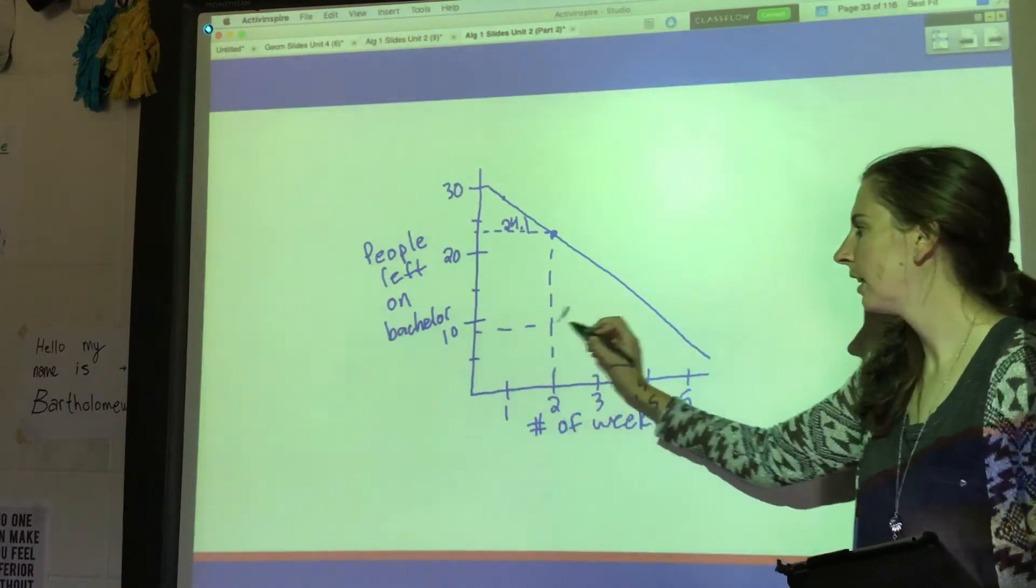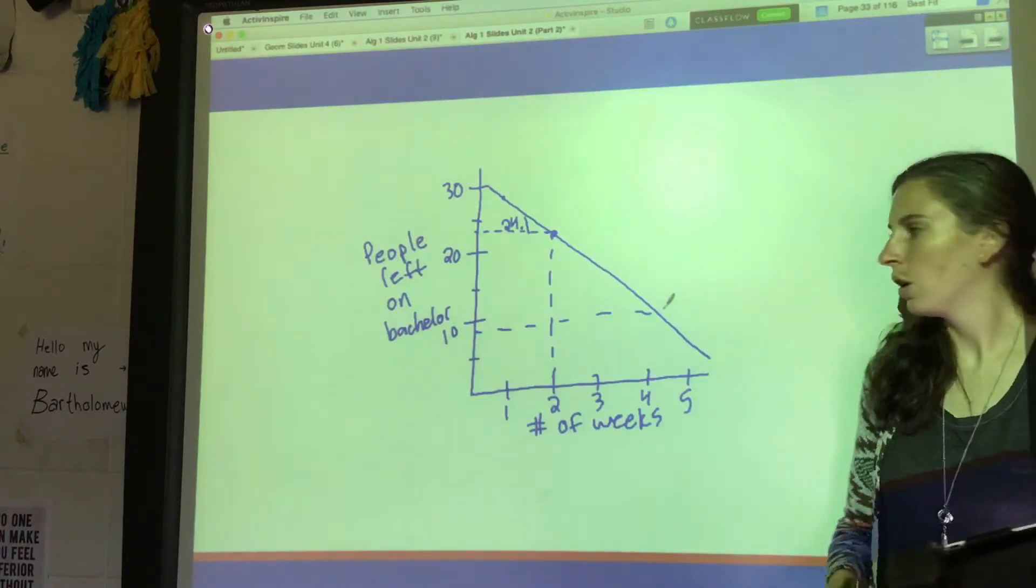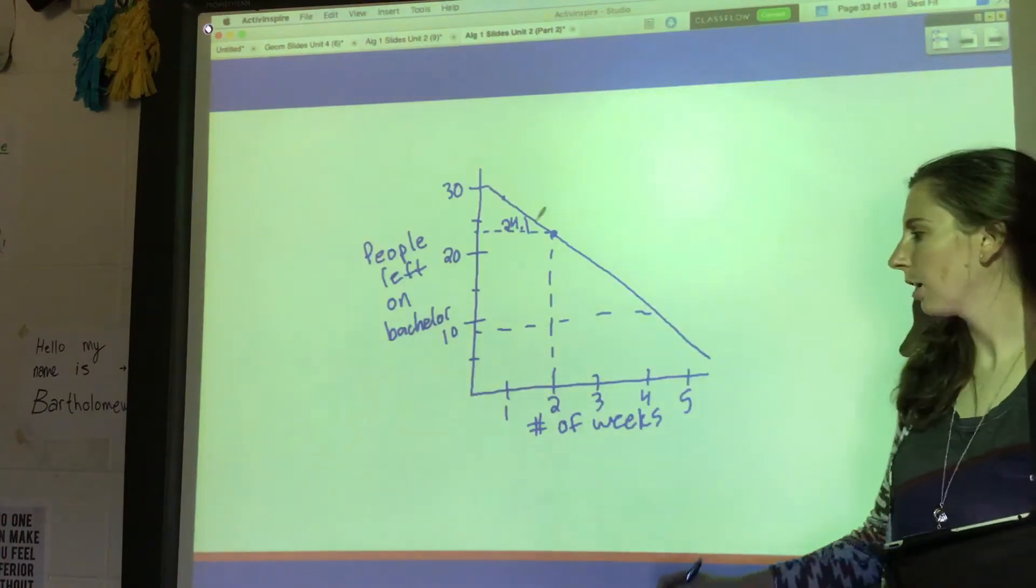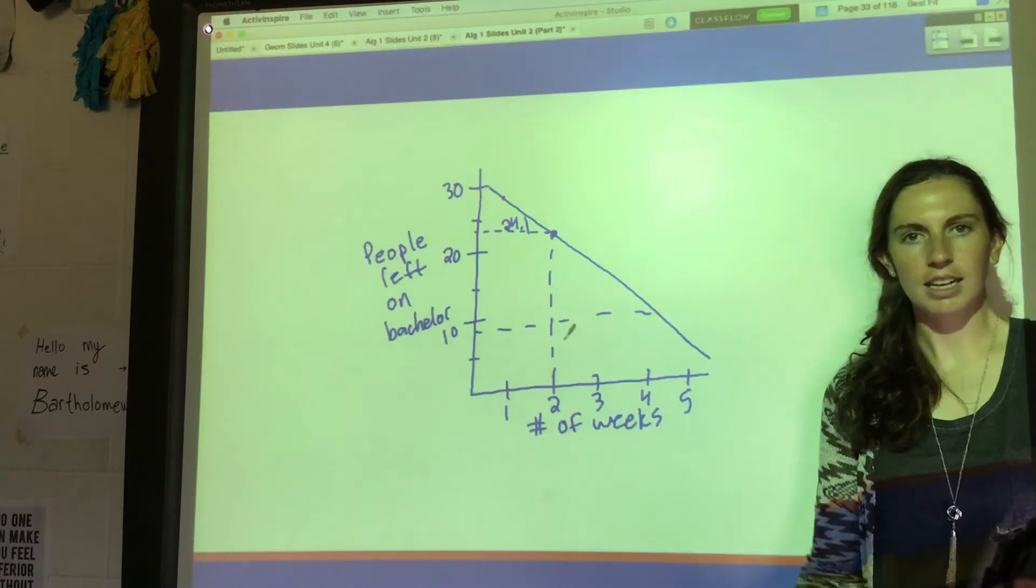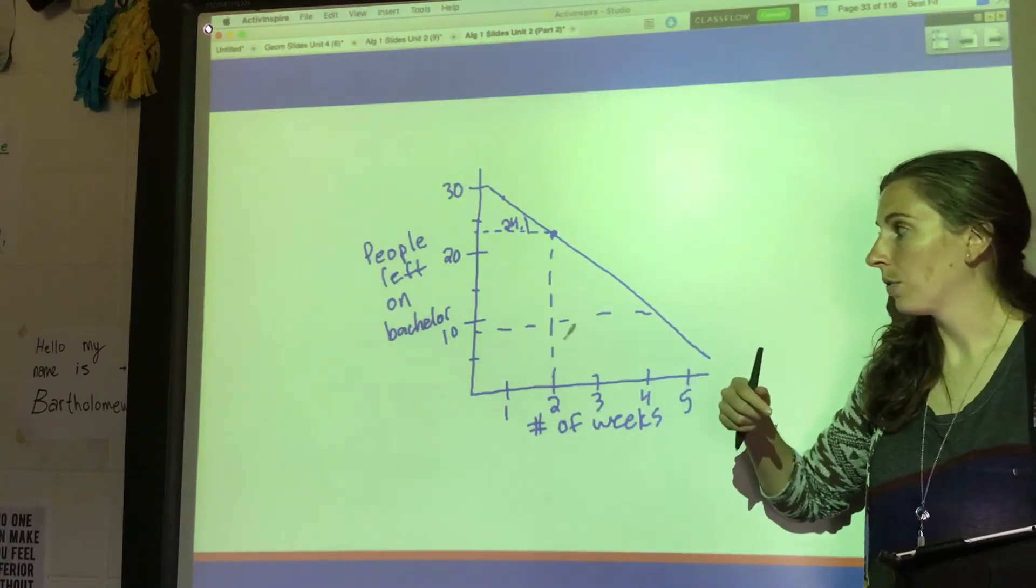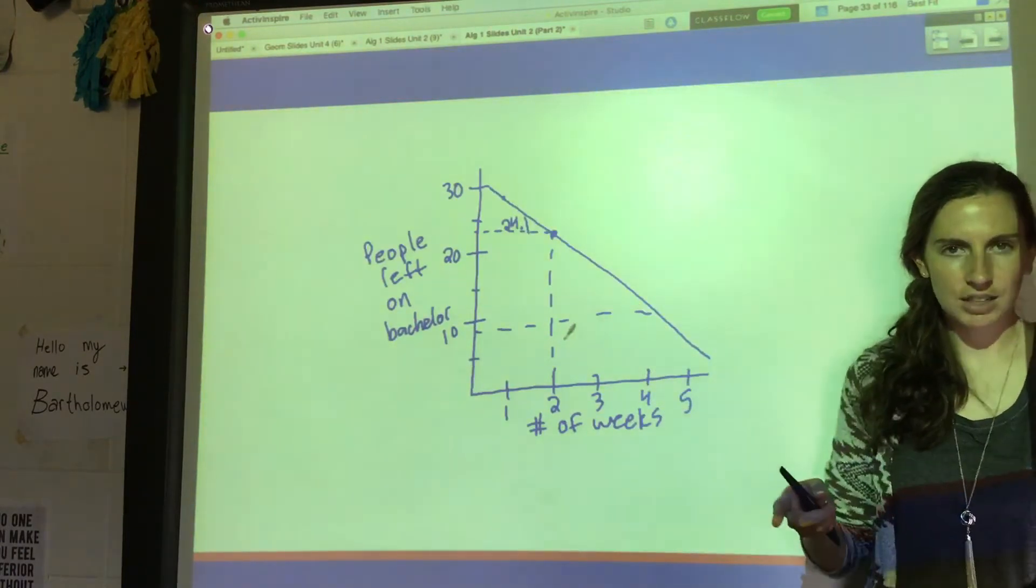Or can we even consider week 1.8 or could we talk about week 2.1? Does that even make sense in this context here? Don't they just get rid of people each week? So what I have drawn is like one steady line, but that doesn't actually make sense.